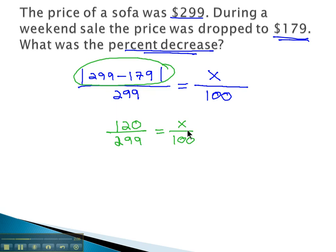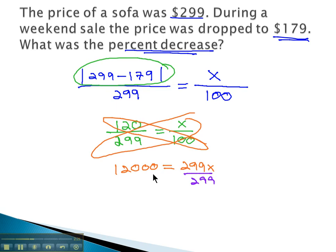We then can solve this proportion, just like always multiplying the diagonals. 12,000 equals 299x, and then dividing both sides by 299.